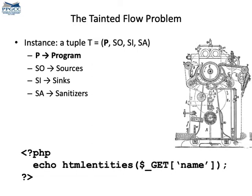These two kinds of vulnerabilities that we have seen are examples of tainted flow vulnerabilities. A tainted flow attack, which exploits this kind of vulnerability, is formed by four things. The first, of course, is the program that's the target of the attack.